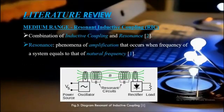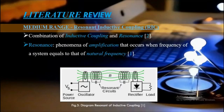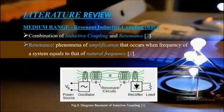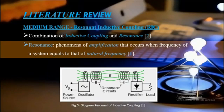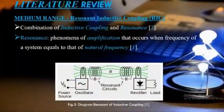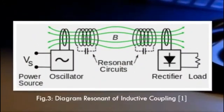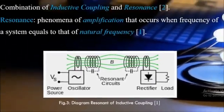The first medium-range technique is resonant inductive coupling. It is very similar to short-range inductive coupling — the only difference is resonance. Resonance is a basic phenomenon of amplification that occurs when the frequency of a system equals its natural frequency. For example, sometimes when you close the door of your room, the windows or another door nearby starts shaking — that's resonance; it happens because the frequencies of those objects become equivalent. Looking at the diagram, it shows an electronic circuit where resonant circuits are used to equalize the frequencies of two systems, enabling energy transfer.